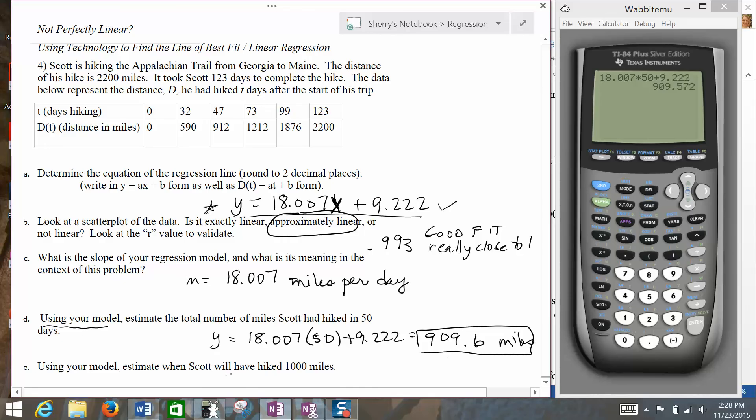For the last problem, it asks us to use our model, estimate when Scott will have hiked 1,000 miles. So this time, we know the number of miles, so we're going to plug that into the Y value in our equation and solve for X this time. So it's just a matter of deciding which spot you put those values and variables in.